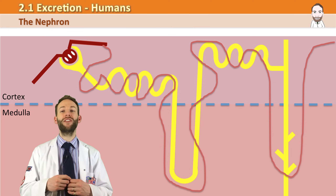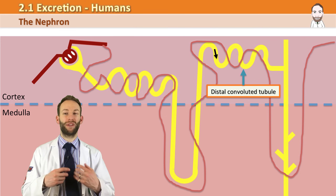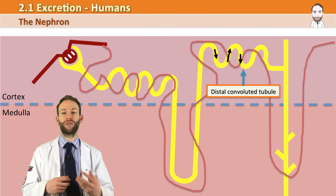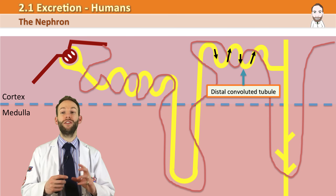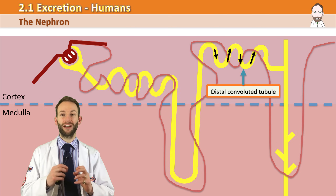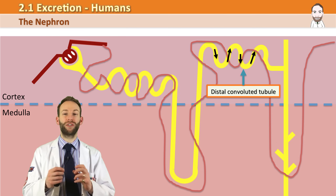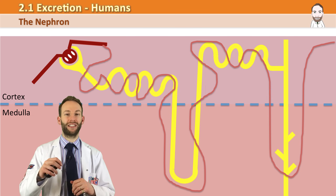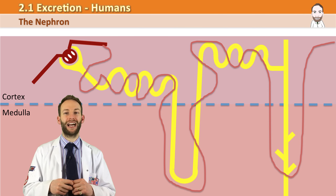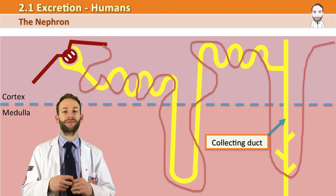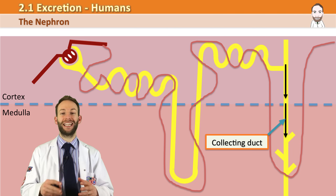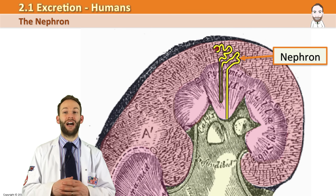The fluid then continues on its way — there's not much left in it now: some water, some salt, some urea, but pretty much all the good molecules have been reabsorbed. The distal convoluted tubule is used for fine tuning and slight adjustments to reabsorption. Finally, the glomerular filtrate passes down the collecting duct, where other nephrons join in, into one major collecting duct that eventually drains into the ureter as waste.